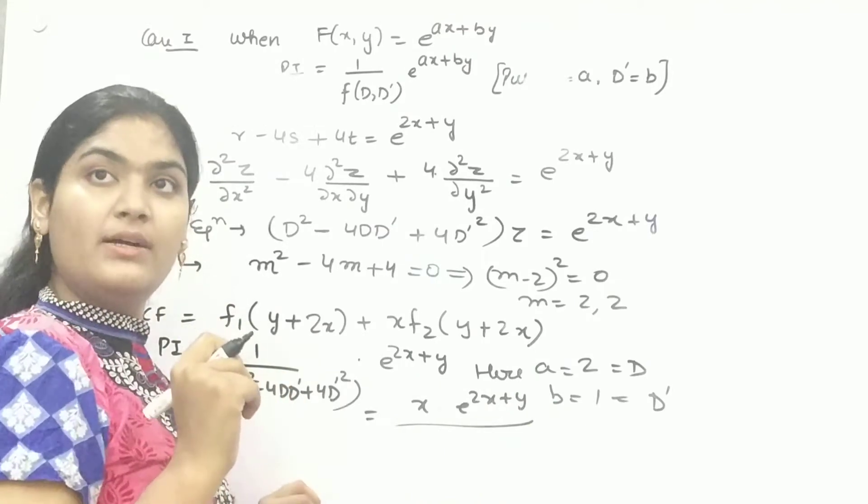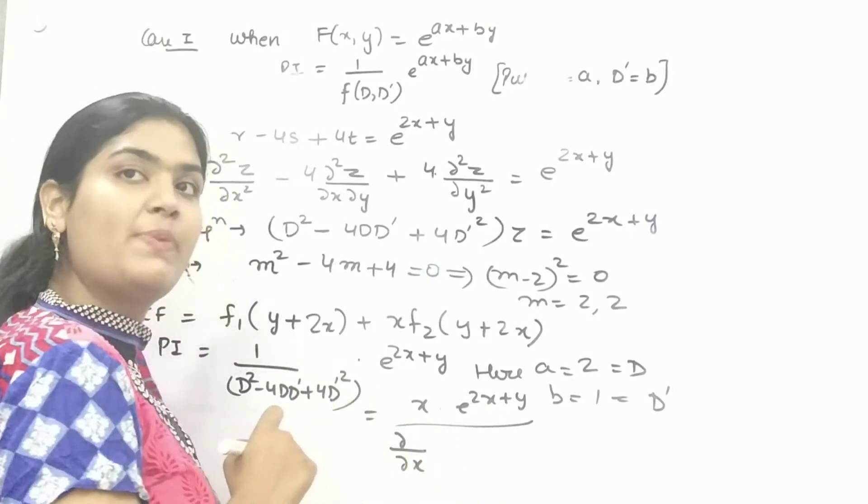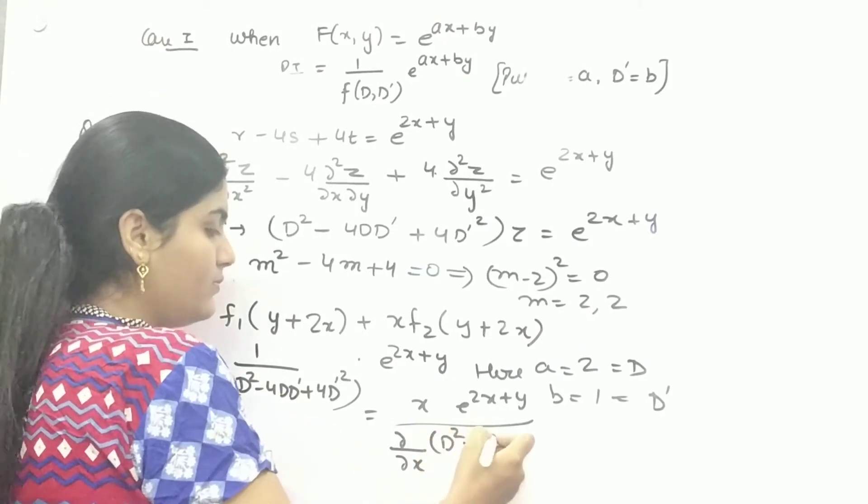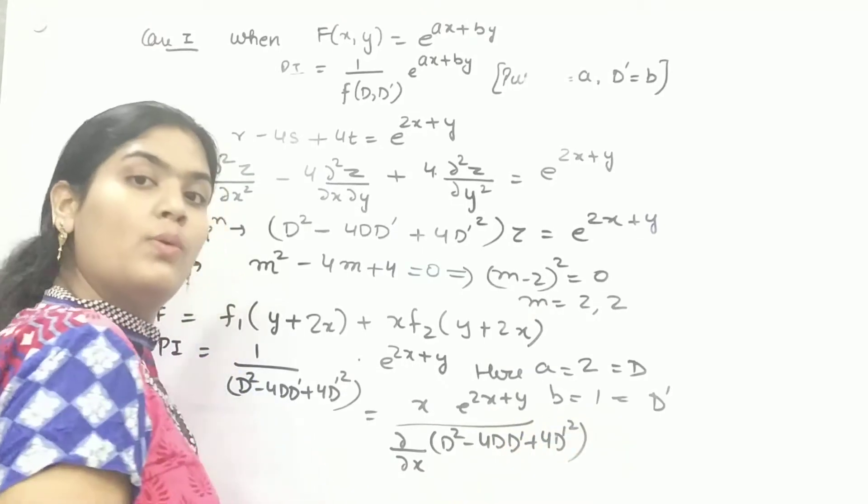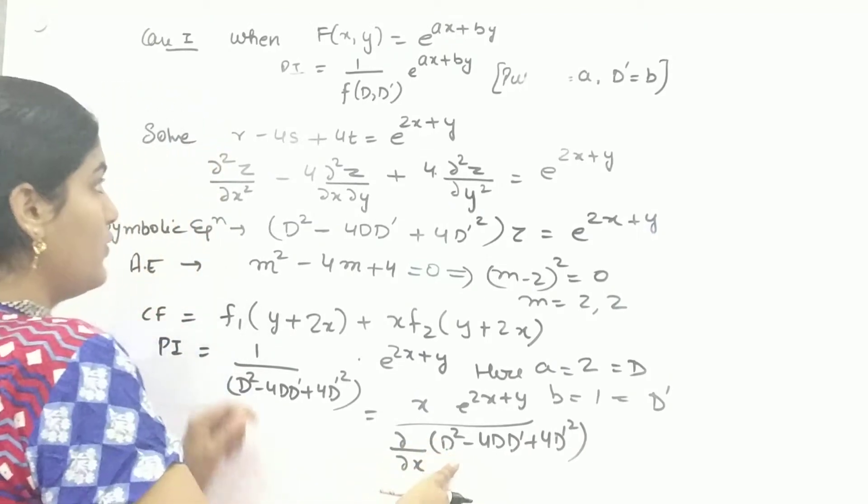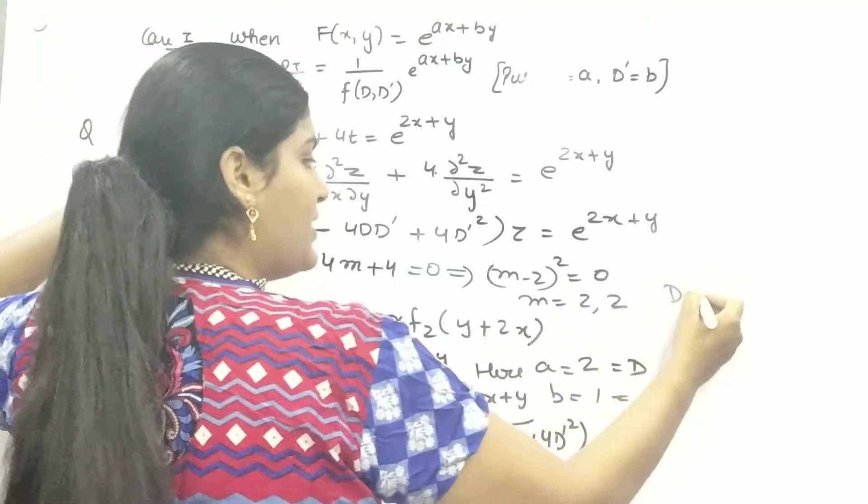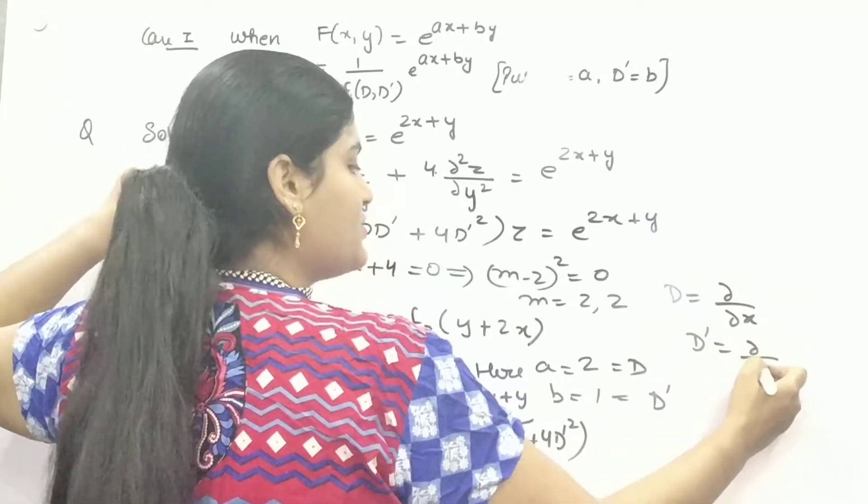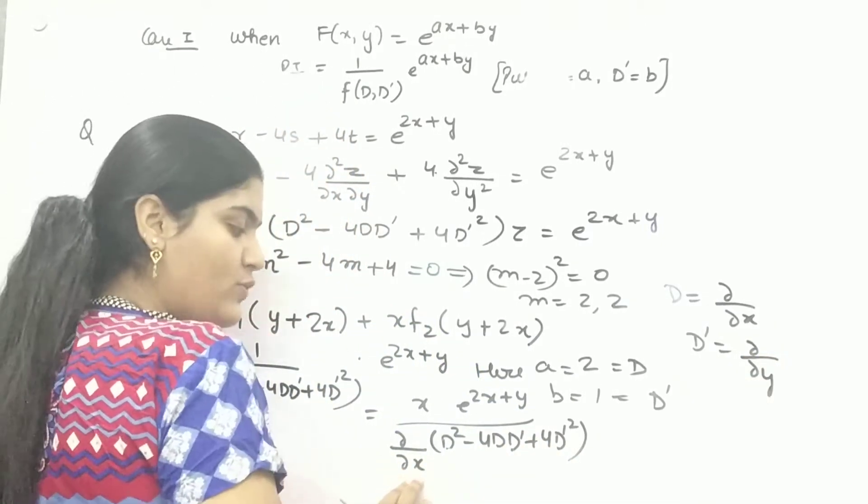And in denominator, what you need to do? You have to take partial differentiation with respect to X of this form. So what is the partial differentiation here? This is in the form of, the D is partial differentiation with respect to X and D dash is partial differentiation with respect to Y.